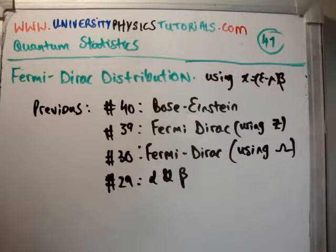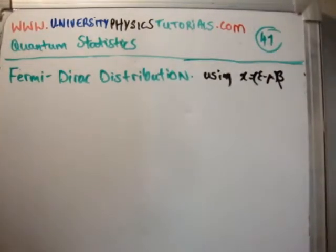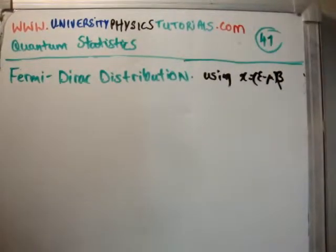This is the third way of deriving the Fermi-Dirac distribution function. I need you to watch video number 40, because all I'm using is an equation I derived in that video.